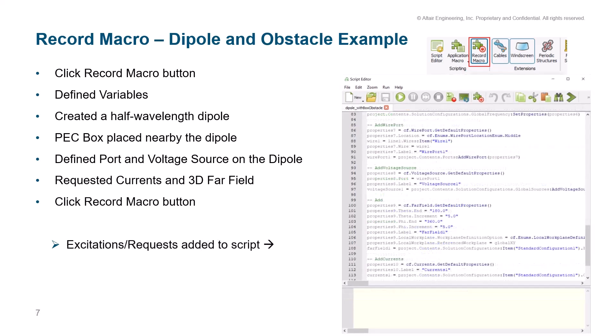In the last portion of the record macro code, we define a wire port on the wire created for the dipole, then add a voltage source to that wire port, and create our far field and current requests. The far field goes from zero to 180 degrees in theta and zero to 360 degrees in phi in five degree increments.